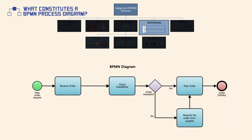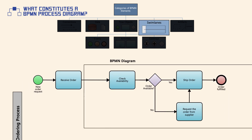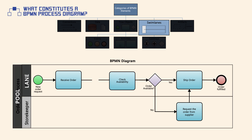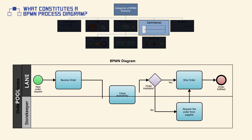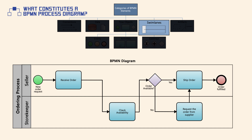Swim lanes are used to define and organize processes. They consist of two elements: pools and lanes. Pools represent a process participant and may include a process, whereas lanes are used to organize work within a process.